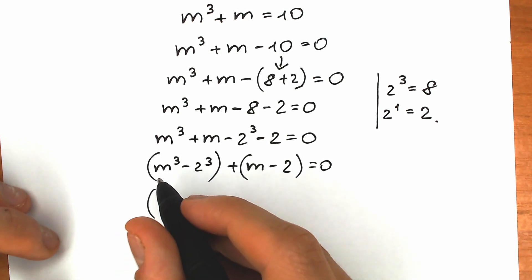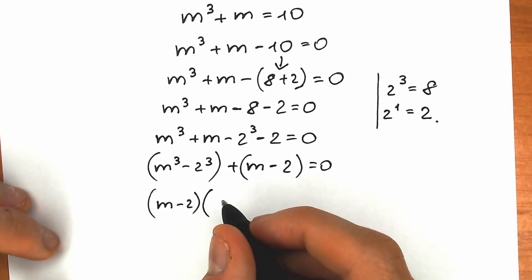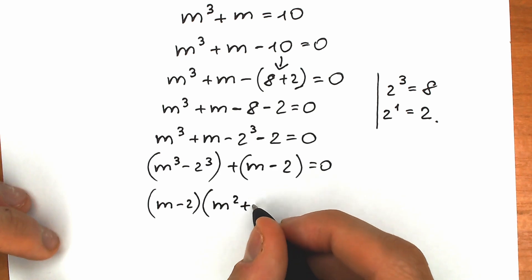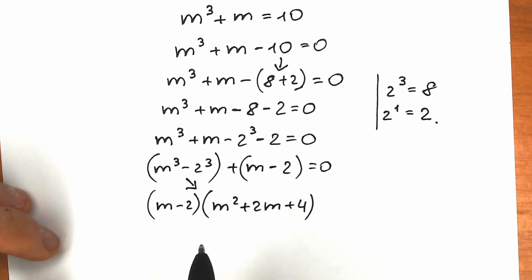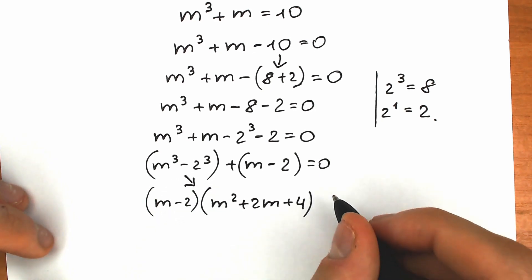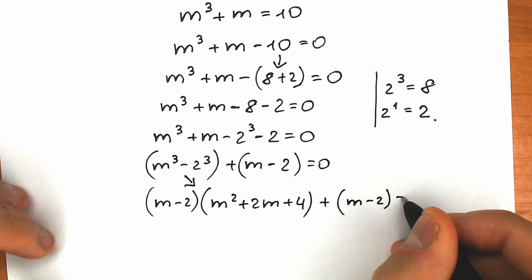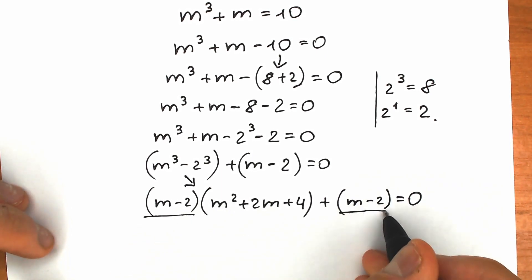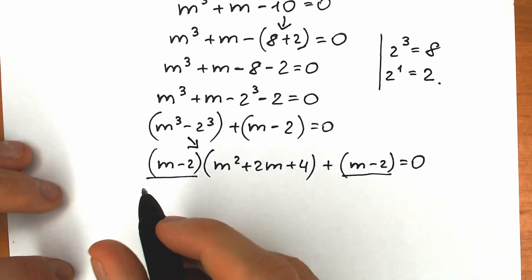We need to remember the difference of two cubes formula. When we factor m cubed minus 2 cubed, we get (m minus 2) in the first parenthesis, and (m squared plus 2m plus 4) in the second parenthesis. Then we also have plus (m minus 2) equal to zero.